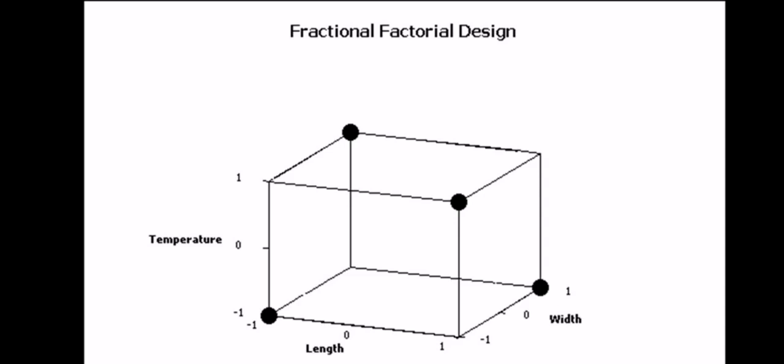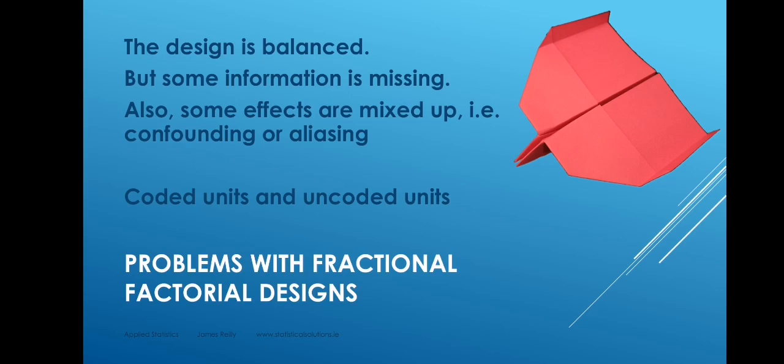You will notice that this is a very well-balanced fraction. Two of those points are for long paper airplanes and two for short; two are for wide and two for narrow; two are for hot air and two for cold. Of the two in hot air, one is wide and one is narrow, one is long and one is short — so the experiment is perfectly balanced. We say this is an orthogonal set. However, some information is missing: for example, if we exclude a long-hot-wide design point and there is a three-way interaction, we will never discover it because we never explore it.